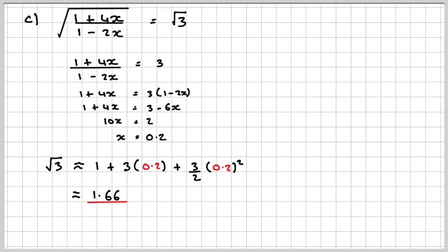And the actual value on the calculator of the square root of 3 is about 1.73. Obviously, the more terms you have, the more accurate it will be.